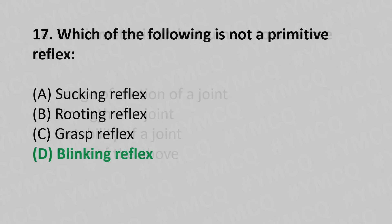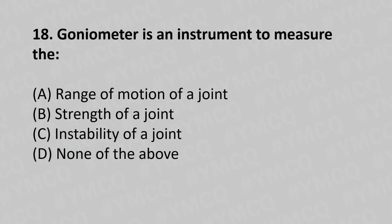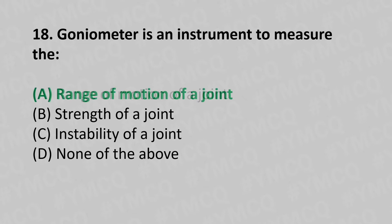Moving to our eighteenth question. A goniometer is an instrument to measure: Option A, range of motion of the joint. Option B, strength of the joint. Option C, instability of the joint. Option D, none of the above. And the answer is Option A, range of motion of the joint.